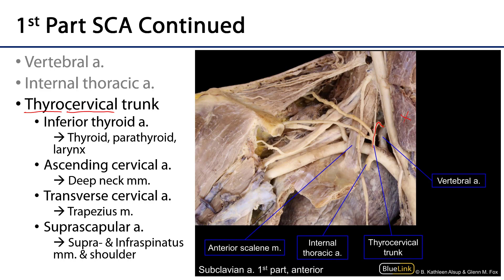The next branch is the ascending cervical artery, which serves deep neck muscles such as the scalene muscles. Then there is the rather large transverse cervical artery, heading over to supply the trapezius muscle with blood. In about one out of every three cases, the transverse cervical artery will also supply the dorsal scapular artery, which is typically a branch of the third part of the subclavian.